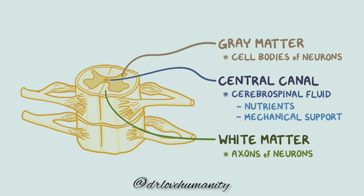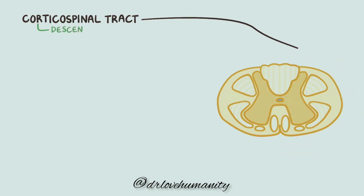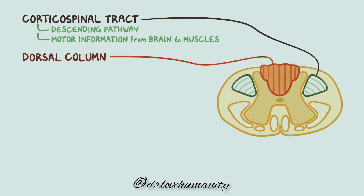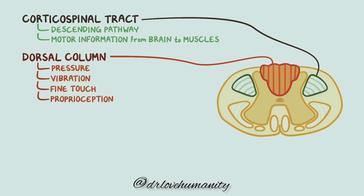The spinal cord has different neural tracts that carry sensory information to and from the brain. The corticospinal tract is a descending pathway which carries motor information from the brain to various muscles. The dorsal column, found in the posterior portion of the spinal cord, is responsible for sending pressure, vibration, fine touch, and proprioception, or the awareness of one's body in space.